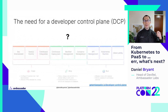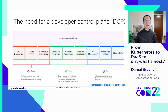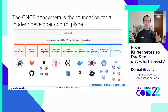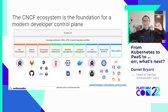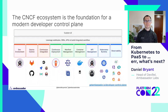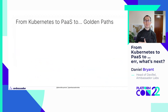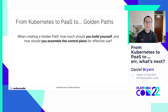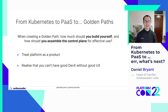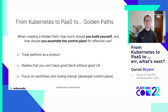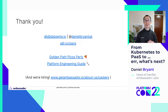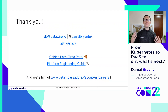The need for a developer control plane — let's wrap this up. There is this thing we need at the top: a developer control plane, a platform interface. We think the CNCF ecosystem is the foundation for this modern developer control plane. You need a custom UI on top — we have this at Ambassador Labs with our service catalogue, and many other service catalogues are emerging. There's machinery like webhooks, CRDs, and APIs below, and then all the tools supporting. If you choose your interop correctly, you can swap out tools. Think about the platform as a product. From Kubernetes to PaaS to golden paths — treat the platform as a product, realise the importance of developer experience and user experience, and focus on your workflows and tooling interop. Think about that developer control plane. Thanks so much.